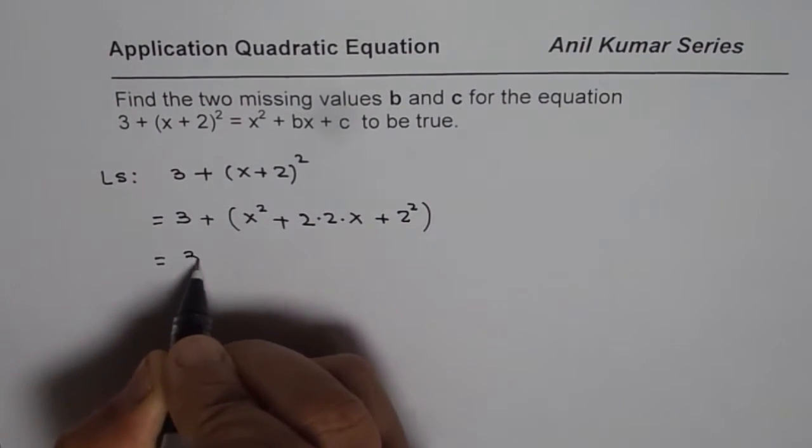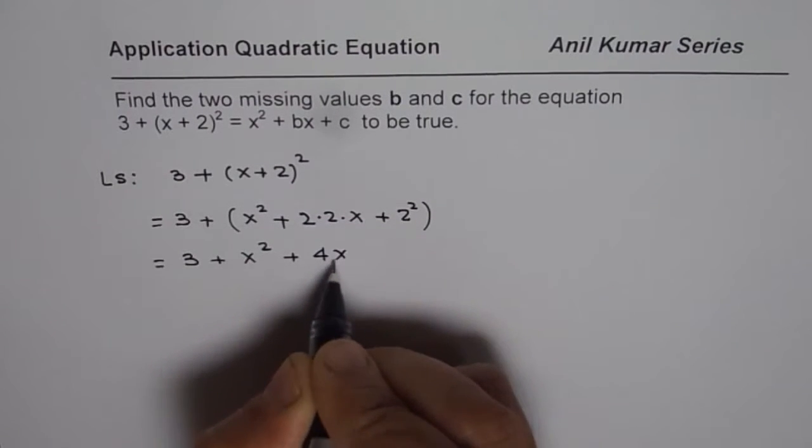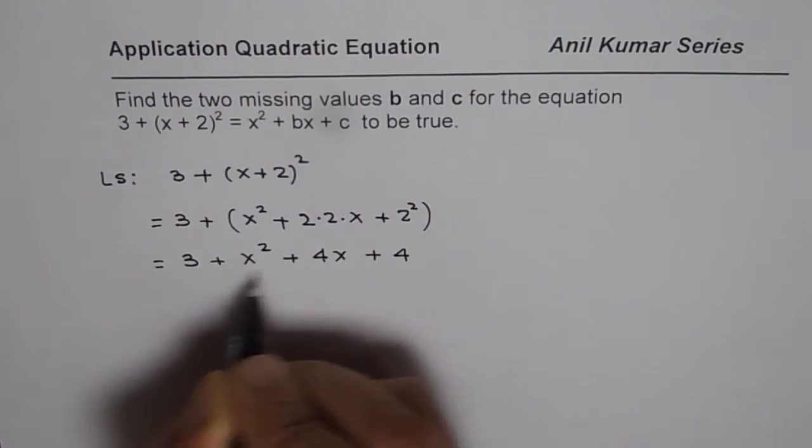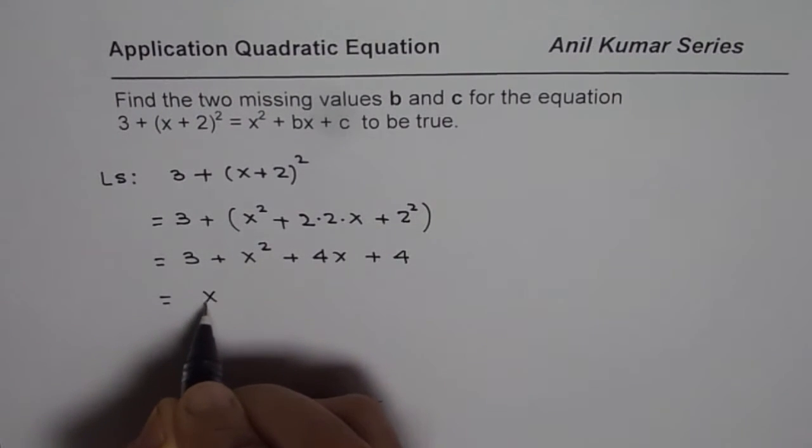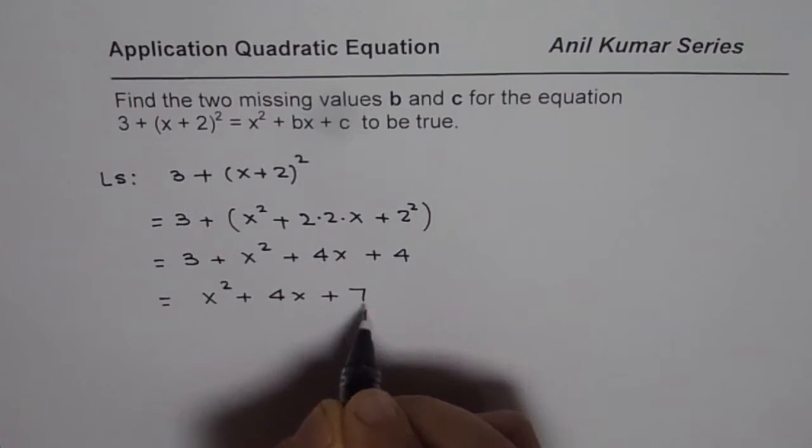Which could be written as 3 plus x square plus 4x plus 4. Now we can combine the like terms. We get x square plus 4x plus 7.